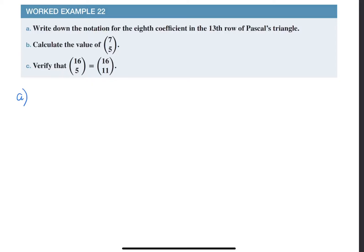So the notation for the eighth coefficient looks like this. Remember that the first coefficient in the thirteenth row will be 13 choose 0. That will be the first coefficient. The second one will be 13 choose 1. So this is the first, this is the second. The third one will be 13 choose 2. So we can see that this number here, what we have over here, is always one less than the coefficient that we have.